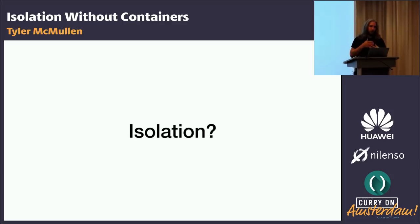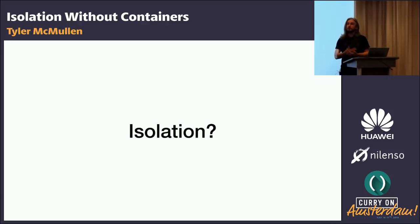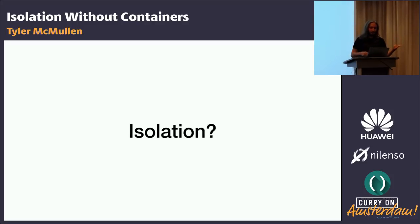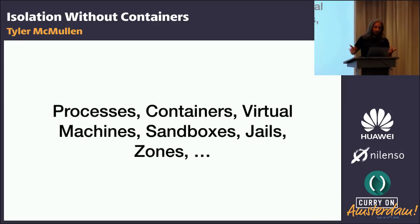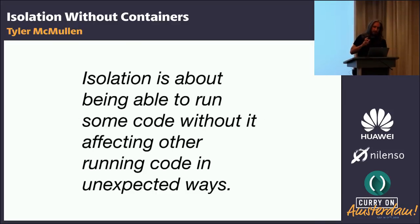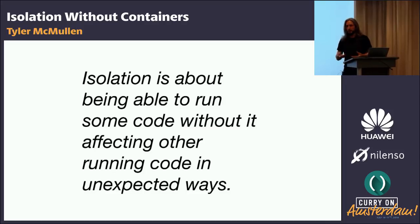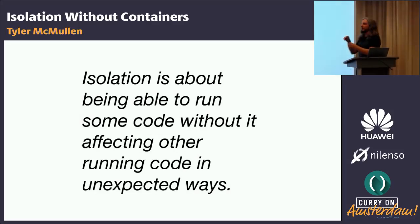First I want to talk about what isolation is and all the different things that could possibly mean. There are different ways we refer to isolation: resource isolation, process isolation, fault isolation, software fault isolation. What isolation actually is about is being able to run some code without it affecting other running code in unexpected ways. That's a super scientific definition that doesn't actually help anyone, but ultimately this is what I'm trying to do.